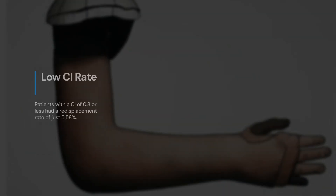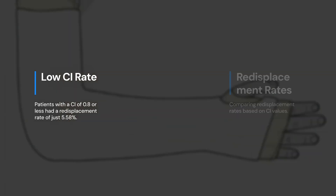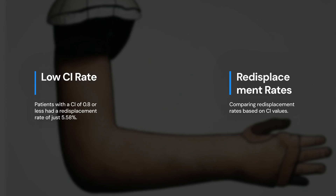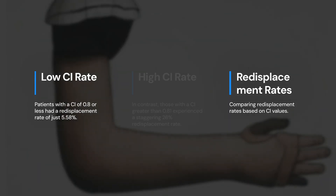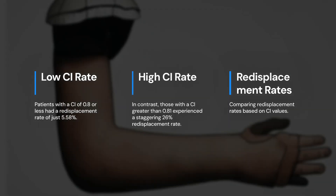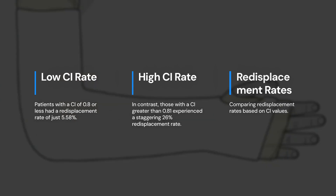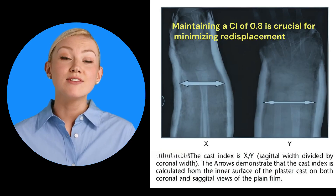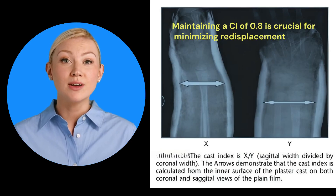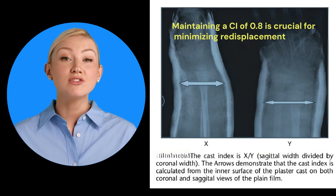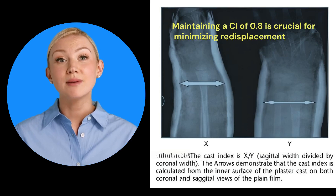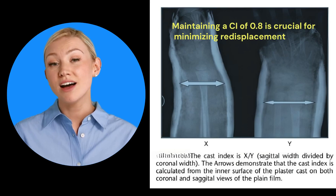Patients with a CI of 0.8 or less had a re-displacement rate of just 5.58%. In contrast, those with a CI greater than 0.81 experienced a staggering 26% re-displacement rate. This study confirms that maintaining a CI of 0.8 is crucial for minimizing re-displacement, making it the gold standard in pediatric forearm fracture treatment.